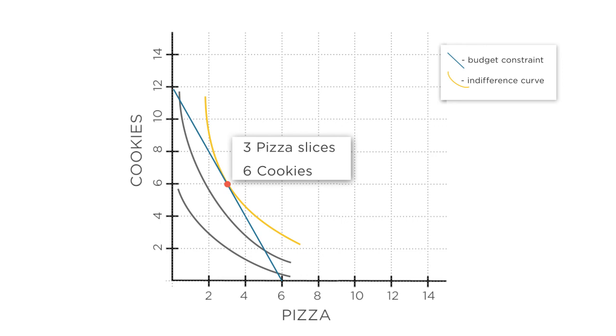If we were to graph this, the indifference curve that passes through the point corresponding to 3 pizza slices and 6 cookies would be tangent to the budget line, just like we saw earlier when we used a graphical approach to think about constrained optimization.